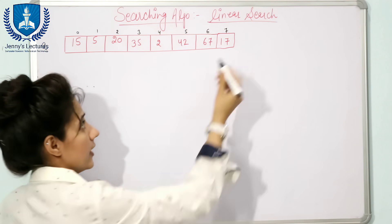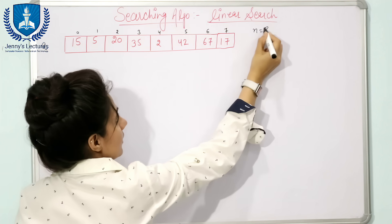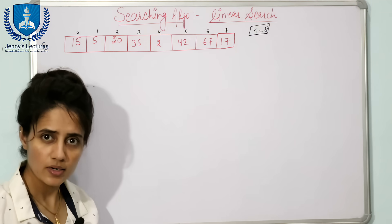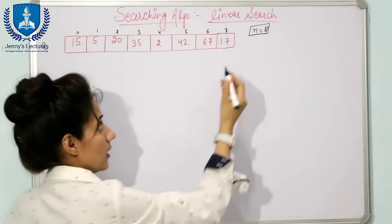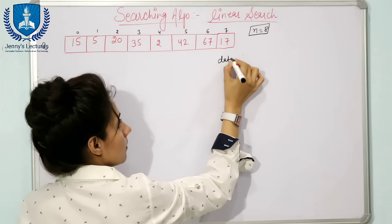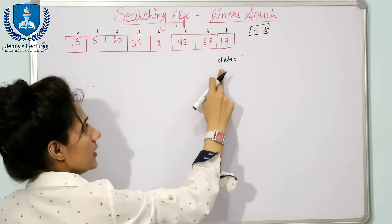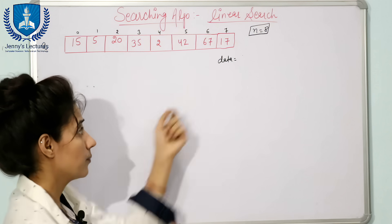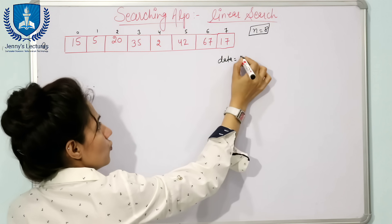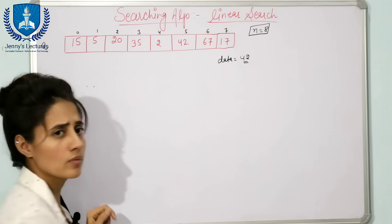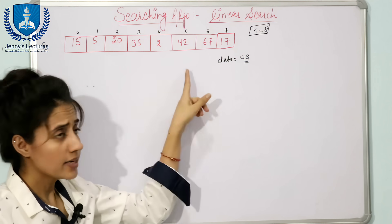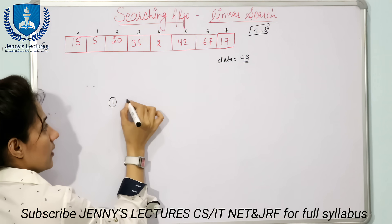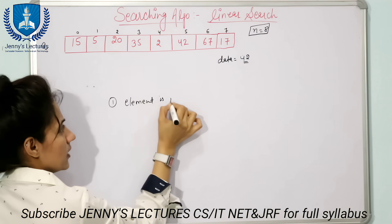Suppose this is our array having n = 8 elements, and the index is from 0 to 7. Now suppose you want to search a data — the value of this data, or key, or variable — let's call it 'data'. Suppose you want to search whether 42 is present in this array or not.